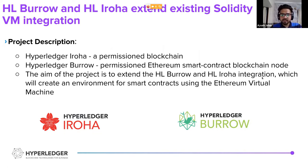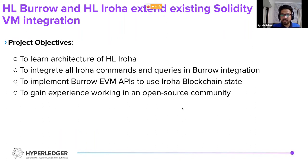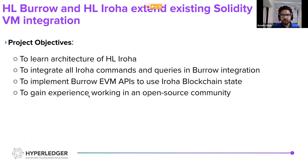The aim of the project was to extend the already existing Hyperledger Burrow integration into Hyperledger Iroha. This will create an environment for the use of smart contracts via the Ethereum virtual machine inside Hyperledger Iroha. The project was initially an extension of an earlier Hyperledger project from the 2019 mentorship program, during which one command and one query each were integrated. My goal was to integrate all the remaining Iroha commands and queries inside this Burrow integration, and also to learn about the architecture of Hyperledger Iroha and implement the Burrow EVM APIs to use Iroha blockchain state.